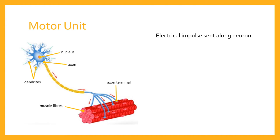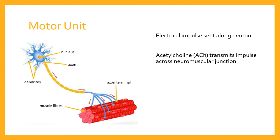Once across, the impulse can be propagated through the muscle fibre to cause it to contract. The first thing that happens once the electrical impulse arrives at the axon terminal is that tiny pouches called vesicles release a neurotransmitter called acetylcholine. Acetylcholine transmits the impulse across the neuromuscular junction — across that cleft — to reach the muscle fibre itself.